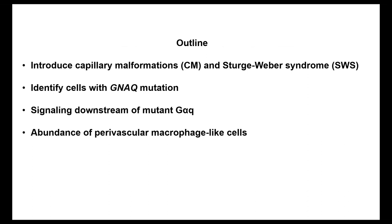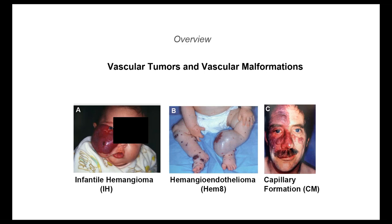Then I'm going to talk about work that Lan has done to identify the cells within the capillary malformations that contain the GNAQ mutation. We'll present some work about signaling downstream from the mutant G-alpha-Q, and then also at the end describe some new findings on perivascular macrophage-like cells surrounding the capillary malformation vessels.